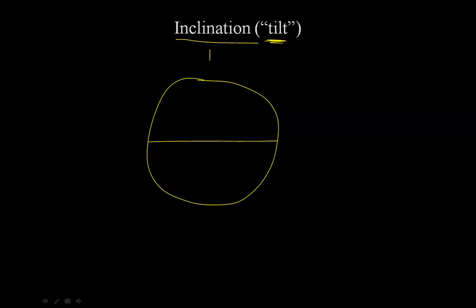Now we can go on to the next classification, which is based on the inclination or the tilt of the orbit. Suppose again this is the Earth, and I'm going to draw the equator of the Earth again here, and this is the north-south pole axis, this being the north pole.